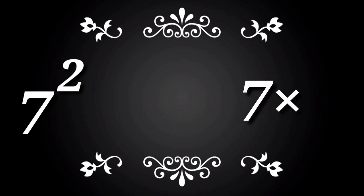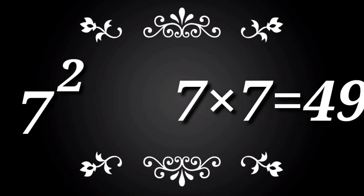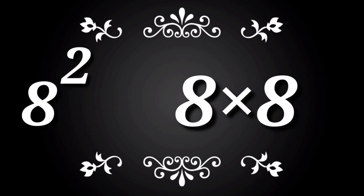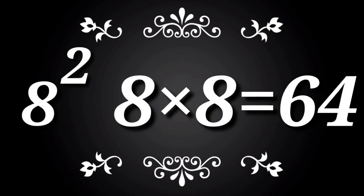7 square. 7 into 7 is equal to 49. 7 7s are 49. 8 square. 8 into 8 is equal to 64. 8 8s are 64.